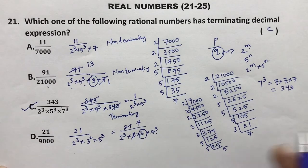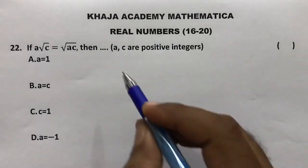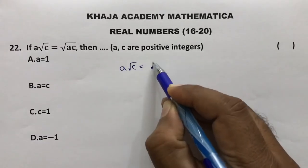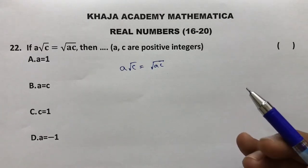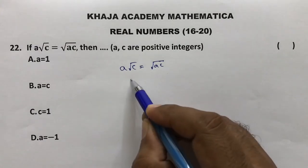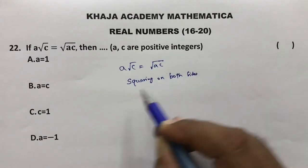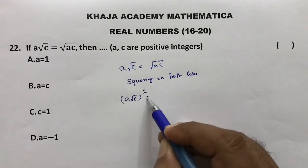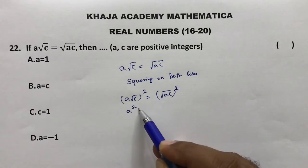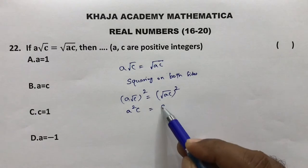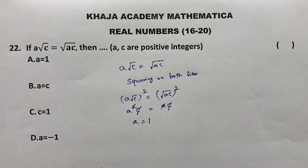New question: if a√c = √ac, which condition is true? Squaring both sides: left side gives a²c, right side gives ac. So a²c = ac, which simplifies to a² = a, meaning a equals 1. The correct option is a = 1.